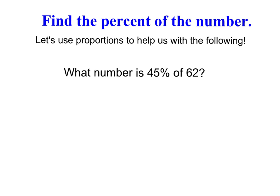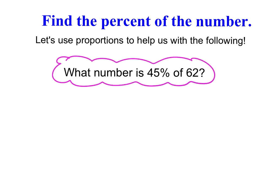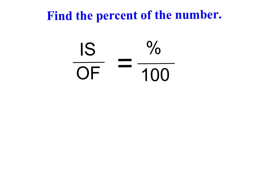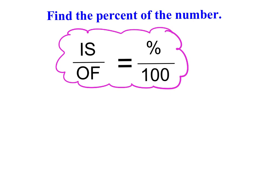Now we're going to look at a new type of example: 'what number is 45% of 62?' This might look confusing at first, but we're going to use our knowledge of percents and proportions to solve it. The key proportion to write into your notes is: is over of equals percent over 100. We'll use these key vocab terms — 'is' and 'of' — to set up and solve percent problems.